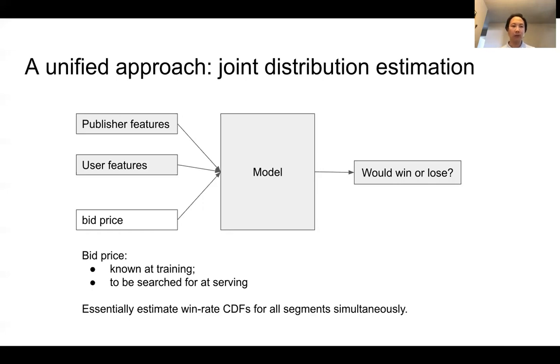So on top of the publisher and user features, we have one special dimension that's the bid price. This is not a problem at the training time because for training historical data, we have the bid prices.